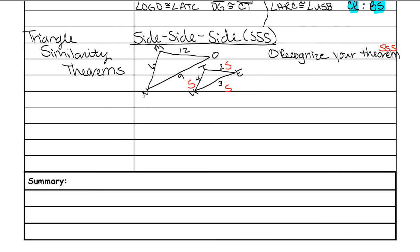The next thing you want to do is to put the side lengths in order from small, medium, and large. Look for the smallest side of both triangles — on this one it's 6, on the other it's 2. Then find the medium side: on this one it's 9, and on the other it's 3. The largest side for both triangles is 12 and 4. So those are my corresponding sides.